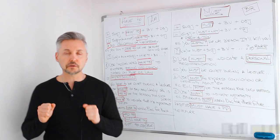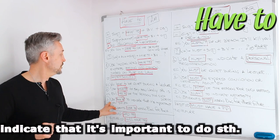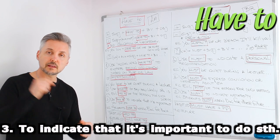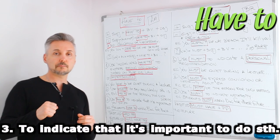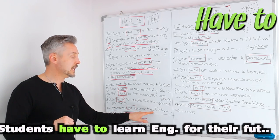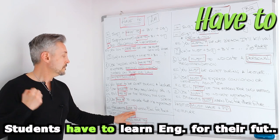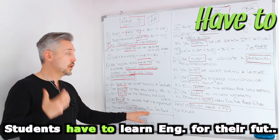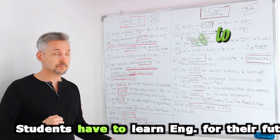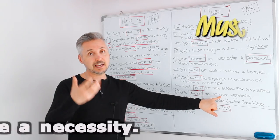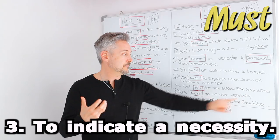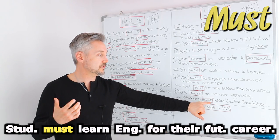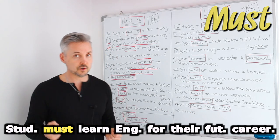The third usage is for have to, to indicate that it's important to do something. For example: students have to learn English for their future career — meaning it's important for students to learn English. Instead, if you use must, it indicates a necessity. So, students must learn English for their future career means it's necessary for students to learn English for their future career.